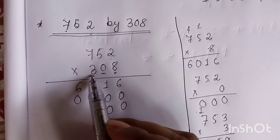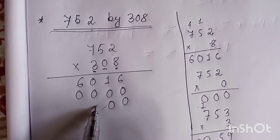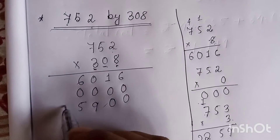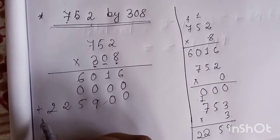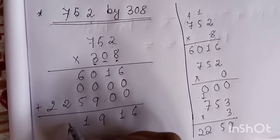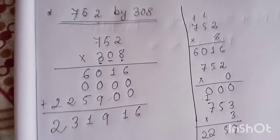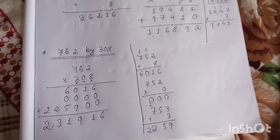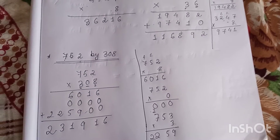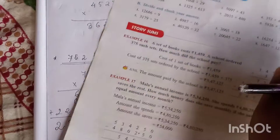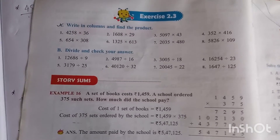The answer for this part gives us the hundreds-place result. Now add all three rows: the final answer is obtained. If you understand this, please solve exercise 2.3, question number one, and show it to me.